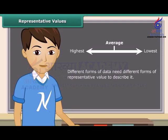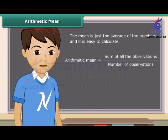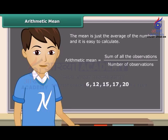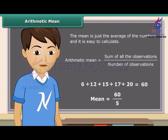Different forms of data need different forms of representative value to describe it. One of these representative values is the arithmetic mean. The mean is just the average of the numbers and it's easy to calculate. Mean is equal to the sum of all the observations divided by the number of observations. Let us calculate the mean of these numbers. Add up the numbers first. The sum of these numbers is 60. There are total 5 numbers. So the mean is equal to 60 divided by 5, which equals 12. Therefore, the mean of the above numbers is 12.